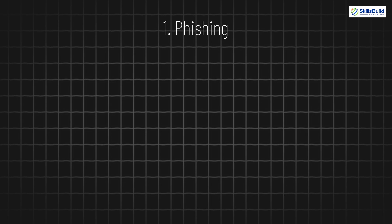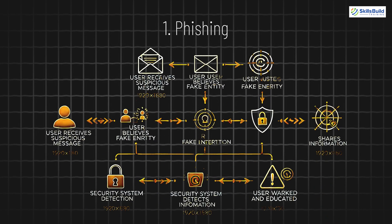1. Phishing. Phishing is when hackers trick you into giving away personal information, like passwords or bank details, by pretending to be someone you trust. They often use fake emails, websites, or social media messages to make their scam look real.